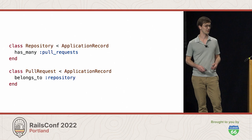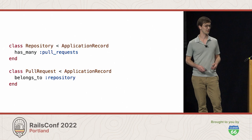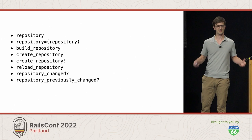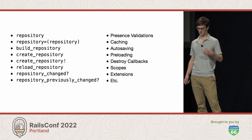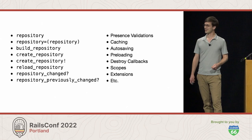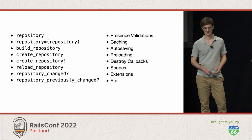I was awestruck when I realized how much behavior was defined by these brief lines of code. 'belongs_to :repository', for example, defines eight different methods for you — methods for reading and writing the repository, for creating new ones. But it also comes with a heap of behavior on top of that: presence validations, a caching mechanism. This is a ton of behavior to get with just a few lines of code.